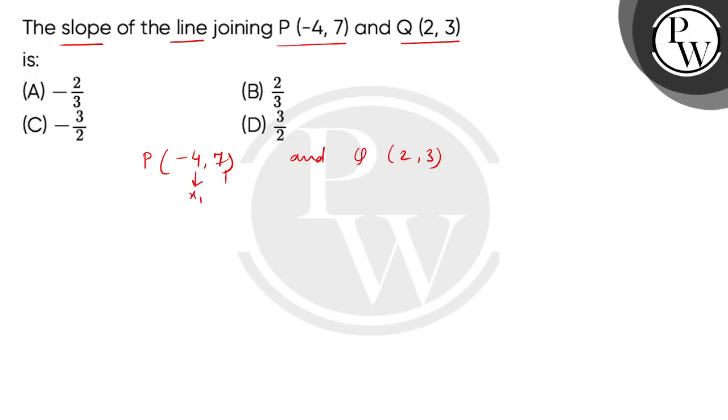So children, we can see this X1, this Y1. This can be taken as X2 and this can be taken as Y2. And we have to find that the two points will join the straight line.